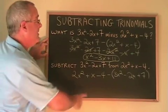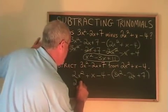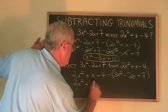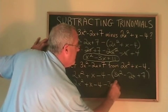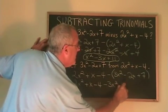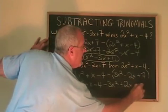From now on, the procedure is the same as it was the first time. We remove the bracket. And, we get minus 3x squared. Minus minus means plus 2x. And, minus plus means minus 7.